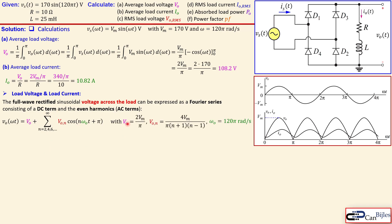Vo = 2Vm/π, and Vo_N are the amplitudes of the harmonics — what appears in front of the cosine terms — given by a specific expression. We leave out the derivation details, but we will use this formula in our calculations. You need the index N for the harmonic number; for example, N=2 means the second harmonic. The fundamental frequency ω₀ = 120π radians per second, which is the fundamental frequency of our source signal.